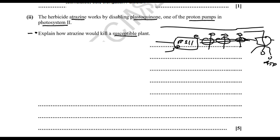Additionally, once electrons travel to photosystem 1, that electron is used to reduce NADP to NADPH. The ATP and NADPH are then used to regenerate RuBP in the Calvin cycle. So all of these points are relevant to explaining how atrazine would kill a susceptible plant.